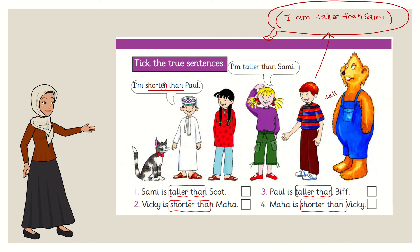Very easy. What is Vicky saying? I am taller than Sammy. Yes, Vicky is taller than Sammy and she is also taller than Maha. Let's see the sentences. Number one, can you read them? Sammy is taller than Suut. Where is Sammy? This is Sammy. Where is Suut? Here is Suut. Sammy is taller than Suut. Is it correct? It is correct. So let's put a tick.